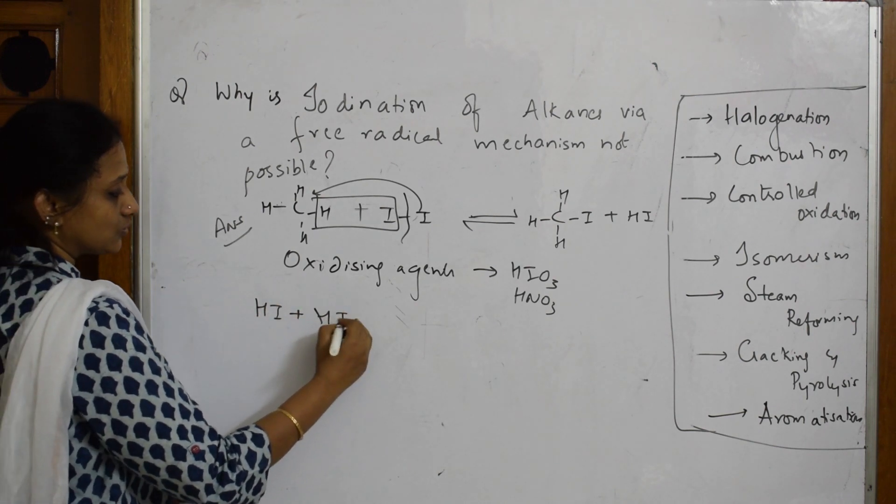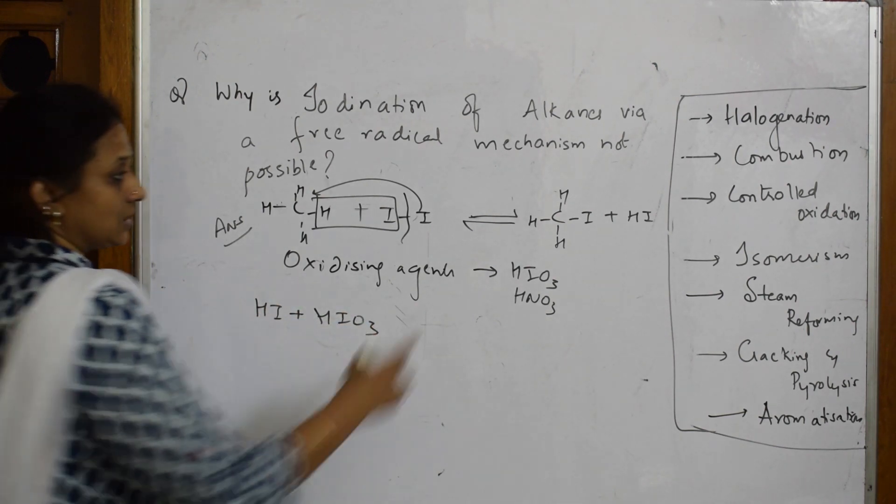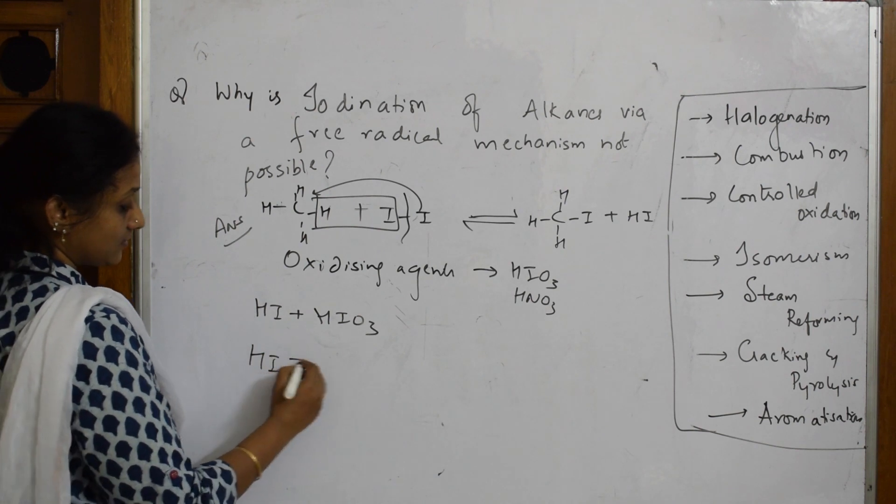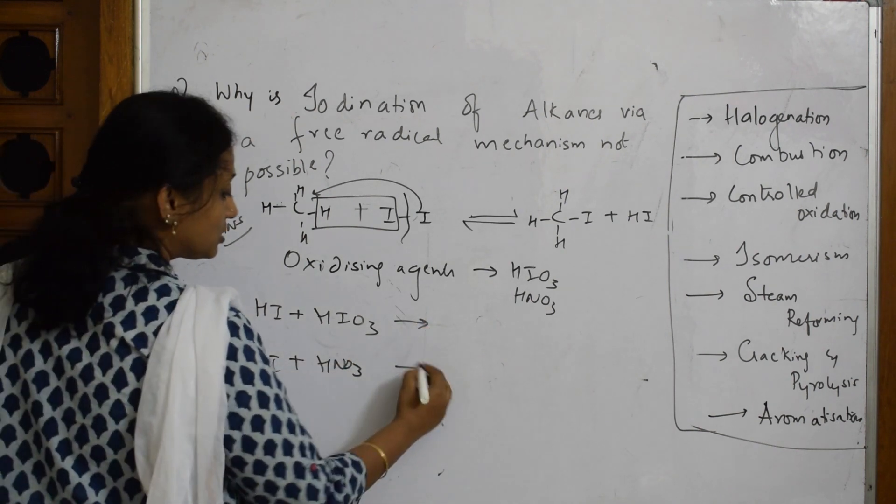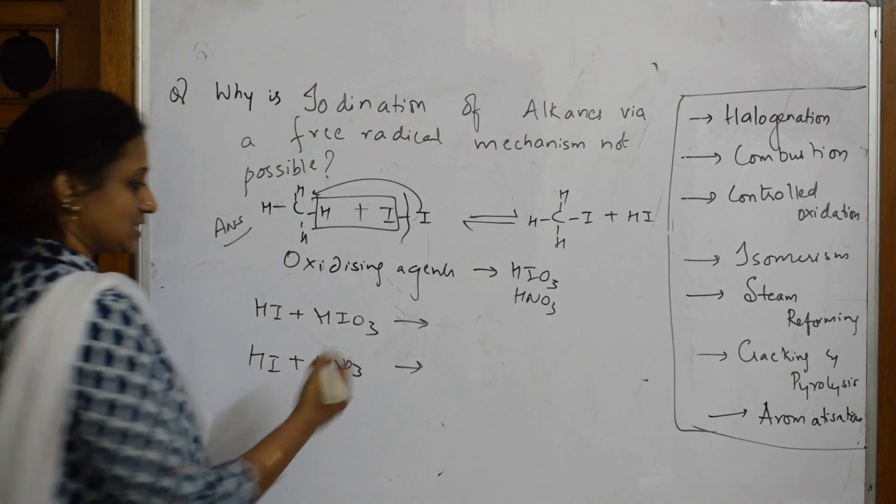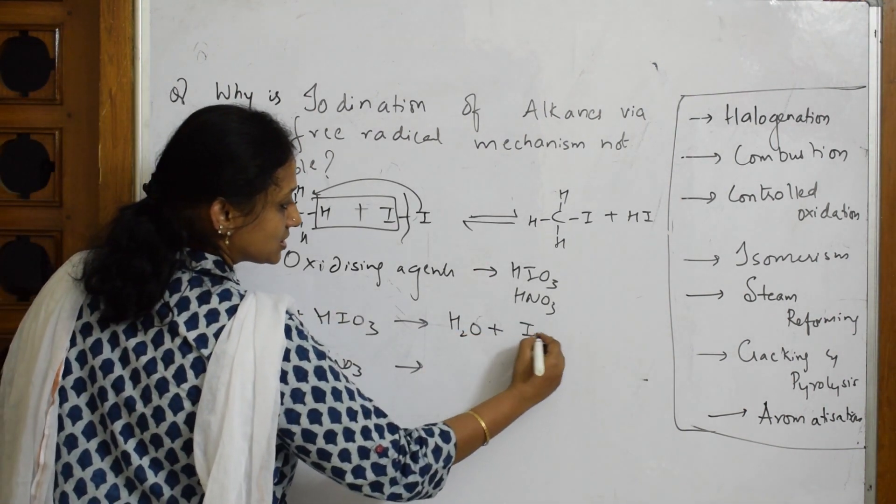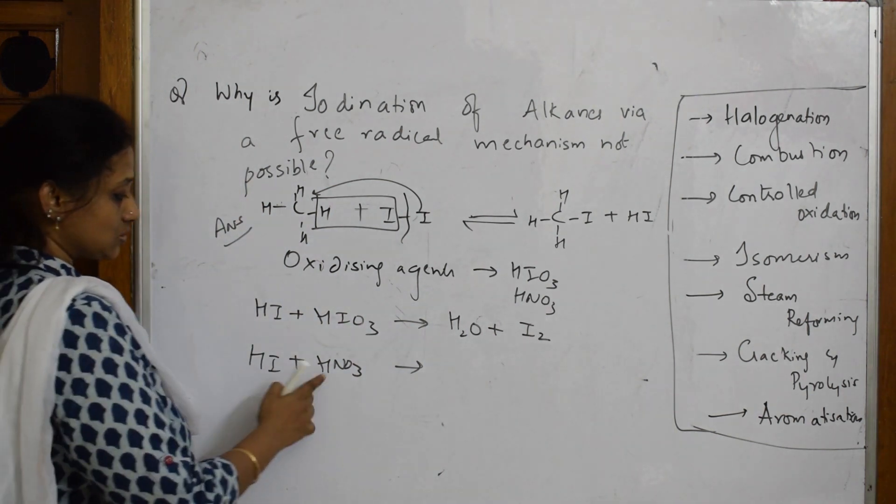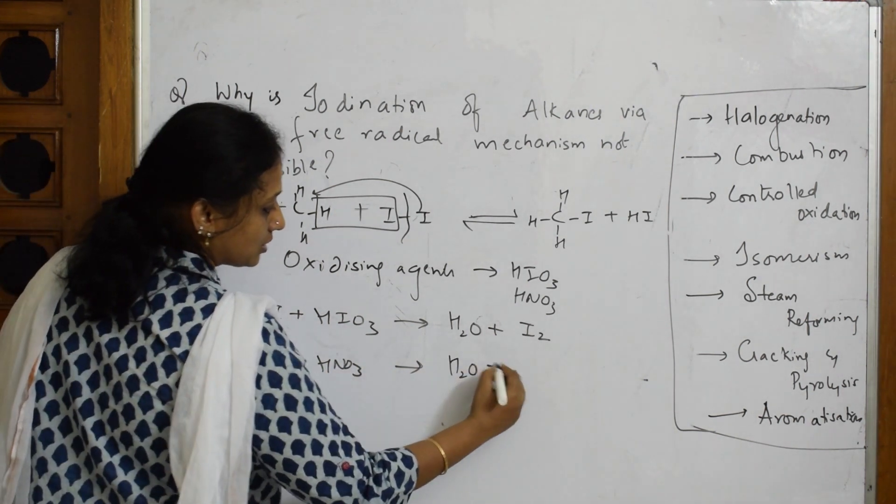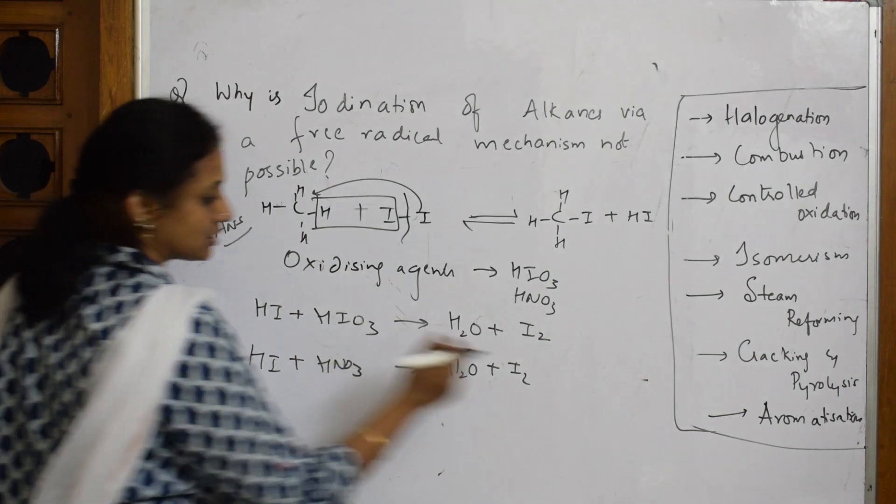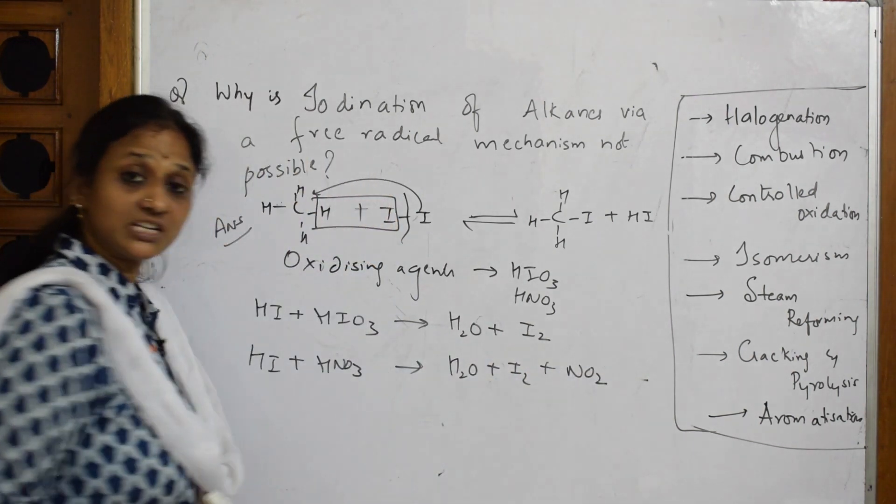So what we do - because I need only forward reaction, not backward - we will take that HI and add HIO3. We will take the same HI and add HNO3. In both cases the products are almost the same: H2O plus iodine here, and H2O plus iodine plus NO2 here. We need to balance the reaction.